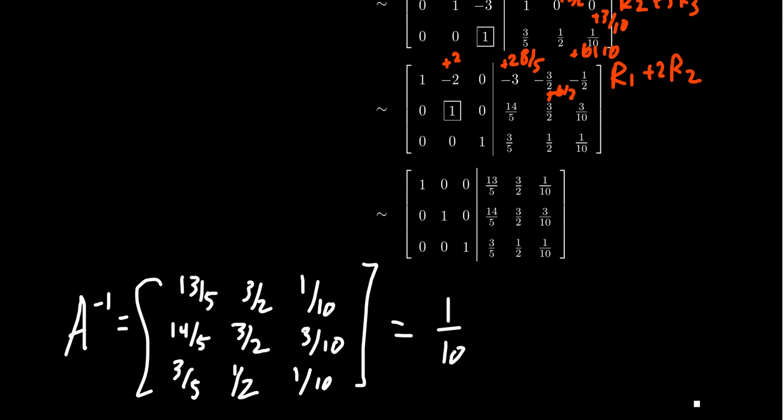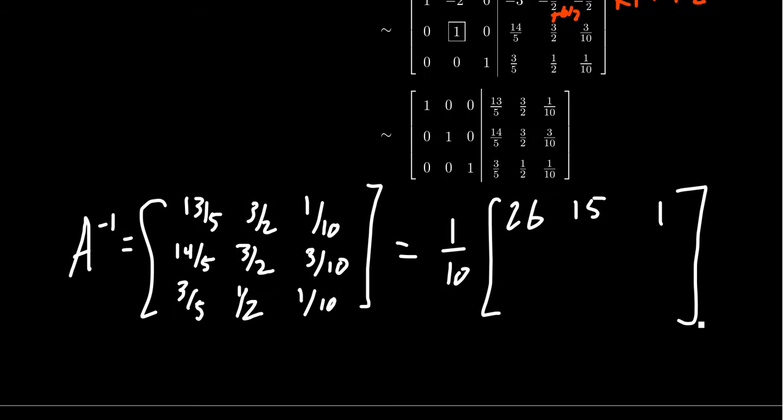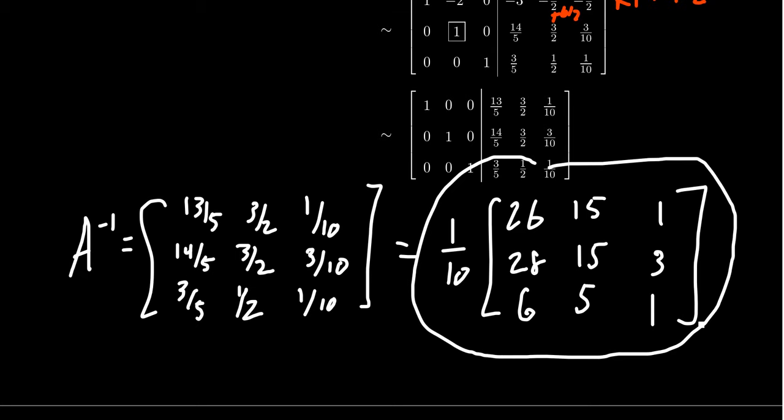If you want to, you could factor out a scalar of 1/10. That'll leave behind 26, 15, 1, 28, 15, 3, 6, 5, and 1. Don't be too worried that the inverse matrix has lots of fractions. Remember what's the whole point of inverse matrices - these are the reciprocal matrices, the matrices when you multiply by will cancel out the multiplication by A. Multiplying by the inverse matrix is matrix division. When you divide whole numbers, you get fractions if things don't divide evenly. That's going to happen with inverse matrices.